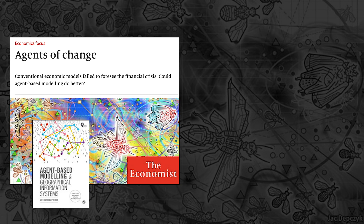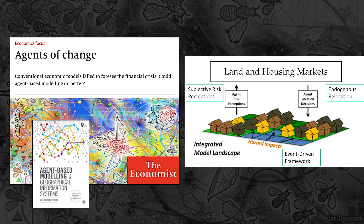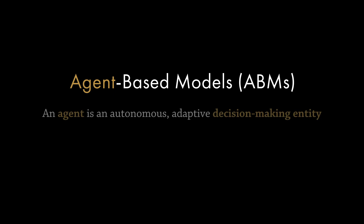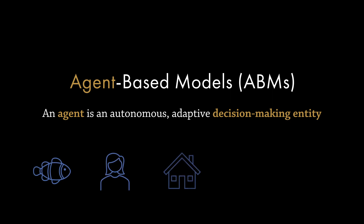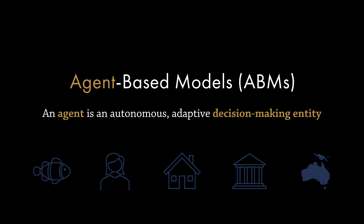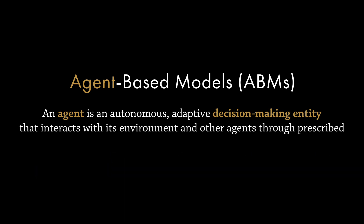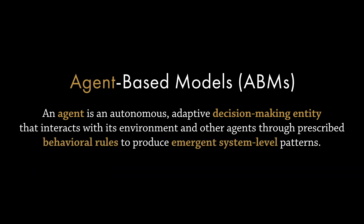Applications range from simple toy models, which are stylized representations of real systems, to high-fidelity models of entire housing or stock markets. So what are ABMs? Let's start first with the agents. An agent is an autonomous, adaptive decision-making entity. Agents can be many things: individual fish, people, households, government agencies, or even entire countries. Each agent interacts with its environment and other agents through prescribed behavioral rules to produce emergent system-level patterns.